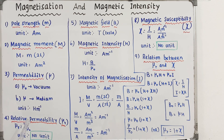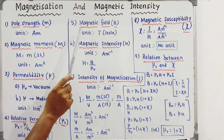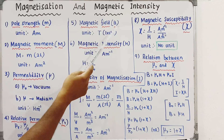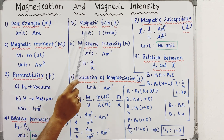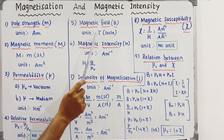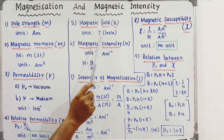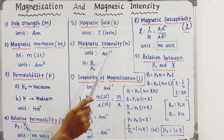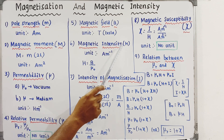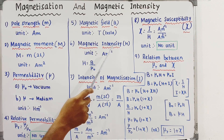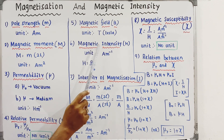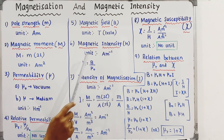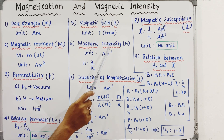The magnetic field or flux density is B, and its unit is Tesla. The magnetic intensity is H, which represents the source of the magnetic field. The unit of magnetic intensity H is Ampere per meter (A·m⁻¹).